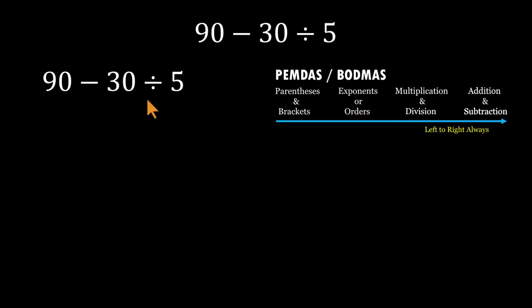So, here's the correct flow. Start with the division. 30 divided by 5 is 6. Now, rewrite the expression as 90 minus 6. And that gives us 84.